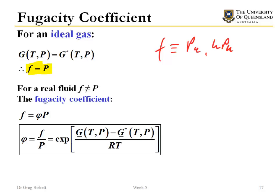For a real fluid, the fugacity doesn't equal pressure. So we can introduce something called the fugacity coefficient, which is just a nice compact way of saying what's the deviation between real gas behavior and ideal gas behavior according to the fugacity.